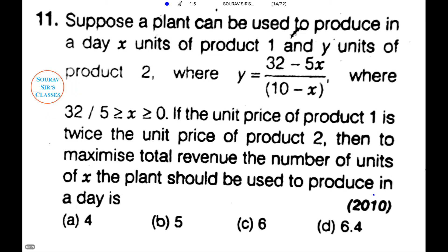The first question is from the year 2010. The question reads: suppose a plant can be used to produce in a day X units of product 1 and Y units of product 2. The relation between Y and X is given, and there is a range of X also given.